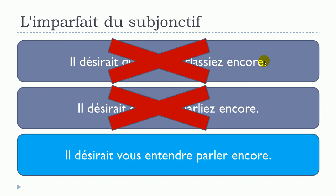This is quite interesting: the first form was correct but it's not used anymore because l'imparfait du subjonctif for vous is quite heavy. The second form is not possible because it is not correct. This is why we tend to use a restructured form that avoids le subjonctif altogether. So there are ways to avoid using l'imparfait du subjonctif — here the solution was il désirait vous entendre parler encore.